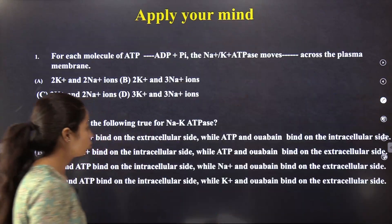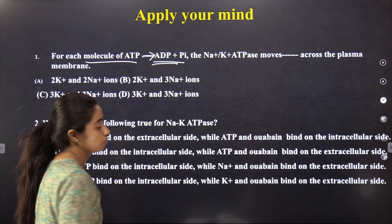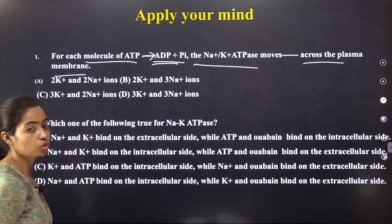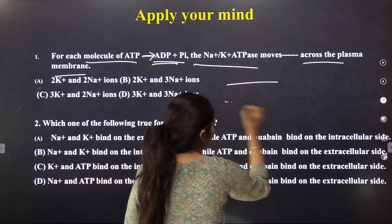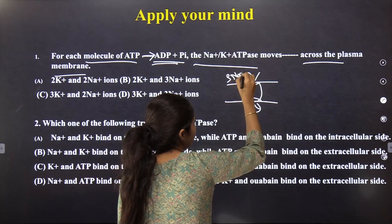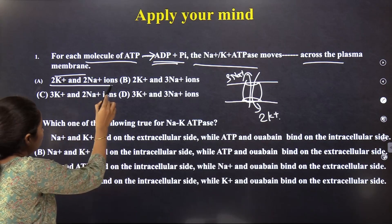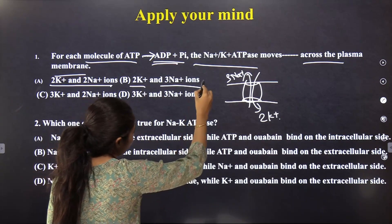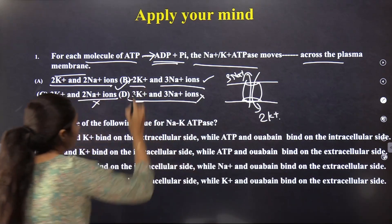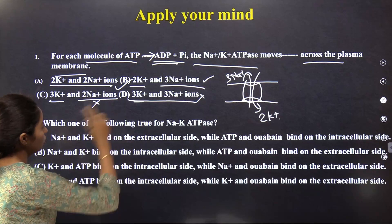Next question: For each molecule of ATP converted to ADP plus inorganic phosphate, the Na+/K+ ATPase moves how many ions across the plasma membrane? We have seen that 3 Na+ are released outside and 2 K+ come inside. So the answer is option B: 2 K+ and 3 Na+ ions.